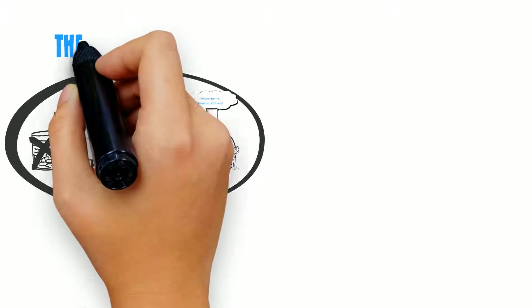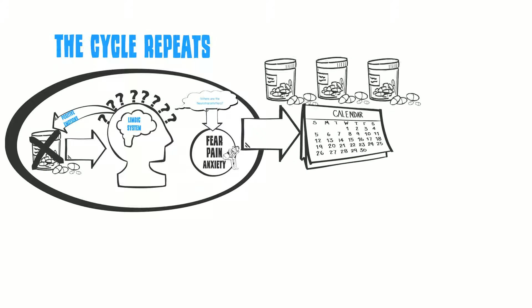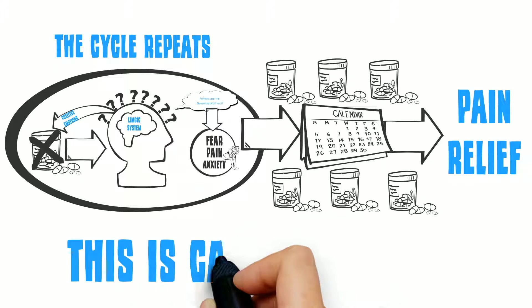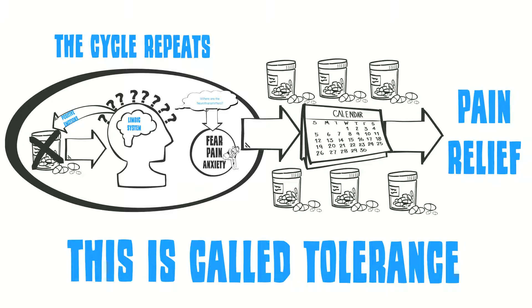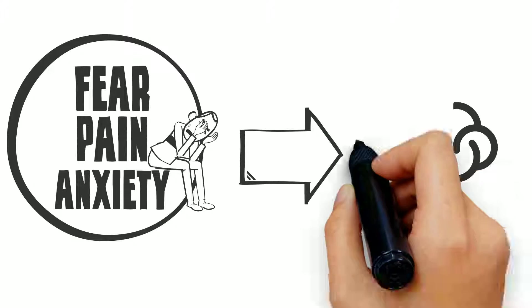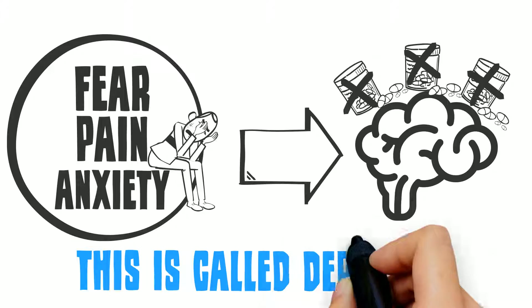Unfortunately, this cycle repeats itself very quickly, and within a few days, it takes more and more pain pills to get the same amount of pain relief. This is called tolerance. Also, the negative emotions that occur when there are no pain pill molecules in your brain get worse, and this is called dependence.